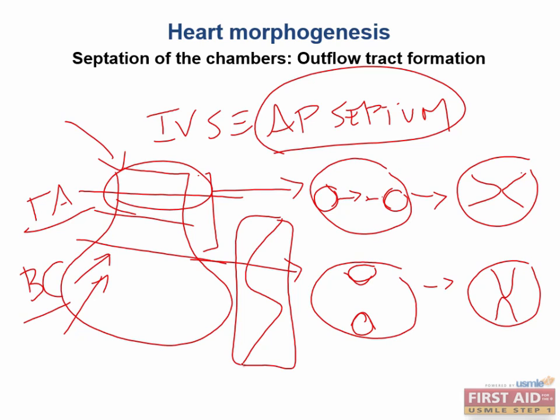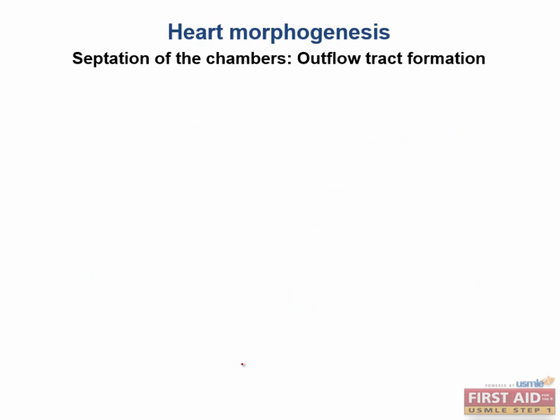Neural crest cells are responsible for coordinating all of this. Neural crest cells interact with the proliferations of the endocardial tissue in the areas of the truncal and bulbar ridges. So the neural crest cells are really important for the development of the aorticopulmonary septum. The 180-degree spiraling movement of the aorticopulmonary septum as it descends causes the truncus arteriosus to rotate.